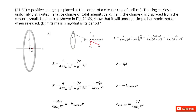We can consider that for this ring, it carries a uniformly distributed negative charge, so it will produce an electric field along the x-axis. Then we put this point charge in this electric field, and it will produce an electric force acting on this particle. If we can prove this restoring force causes simple harmonic motion, then we are done. So the first step is to find the electric field along the x-axis produced by this ring.